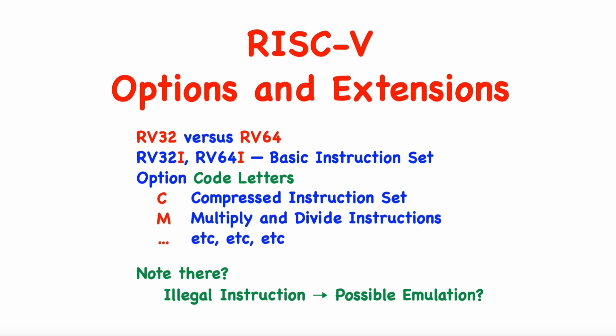So, what if your core doesn't actually implement the M option? Then the multiply and divide instructions will cause an illegal instruction trap, and I'll discuss trap handling in other videos. To summarize, either the program will be terminated by the operating system, or the operating system kernel will emulate the instruction in software, and it will return to your program, which will never know that the operation was not performed in hardware. With today's microcircuits, the simplest multiply and divide hardware implementation is going to fit on all but the very tiniest of cores, so I expect that whichever core you're actually purchasing and running on will really implement the multiply and divide instructions in hardware.